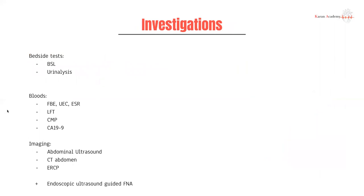Investigations are similar to other pancreatic pathology, but some specific things to mention include CA-19-9, which is very specific for pancreatic cancers. You can also do a CT abdomen, useful for disease staging and prognosis. An ERCP can allow an endoscopic ultrasound-guided fine needle aspirate — EUS-FNA — for pathological findings. With a mass at the head of the pancreas, it is very unlikely to be anything else.